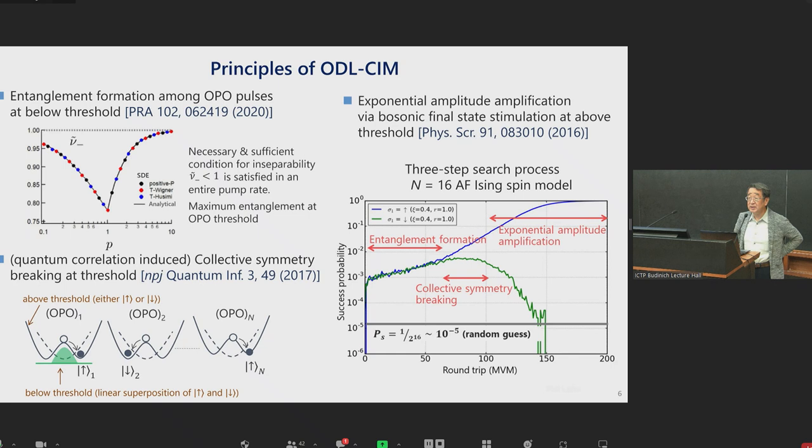Each OPO has a simple harmonic potential for which the electric field amplitude zero is a stable point. But at the threshold, this harmonic potential is deformed to bi-stable, zero-phase, pi-phase potential, and the symmetry is broken. Instead of random breaking of symmetry at OPO threshold, the device actually collectively breaks the symmetry. For instance, if OPO1 breaks symmetry to zero-phase, OPO2 actually breaks symmetry to down-spin and so on, because of the existence of quantum entanglement.